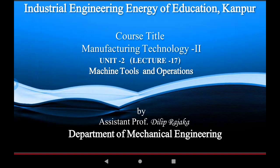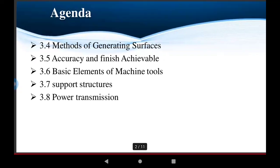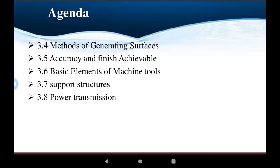Welcome to this lecture series on Manufacturing Technology, Unit 2, Lecture 17: Machine Tools and Operations. The agenda for today includes methods of generating surfaces, accuracy and finishing achievable, and basic elements of machine tools, including support structure, machine elements, and power transmission. All points will be presented in detail in this video.